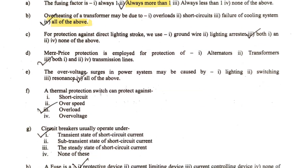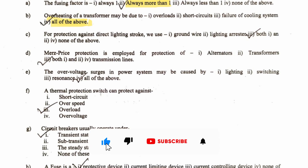The next question: for protection against direct lightning stroke, we use what? For protection against lightning stroke in transmission lines, an overhead ground wire is used. Also, lightning arrestors are used in the power system for bypassing the lightning surges to the earth. Both the ground wire and the lightning arrestor are used for protection against lightning stroke. So option three — both one and two — is the correct answer.